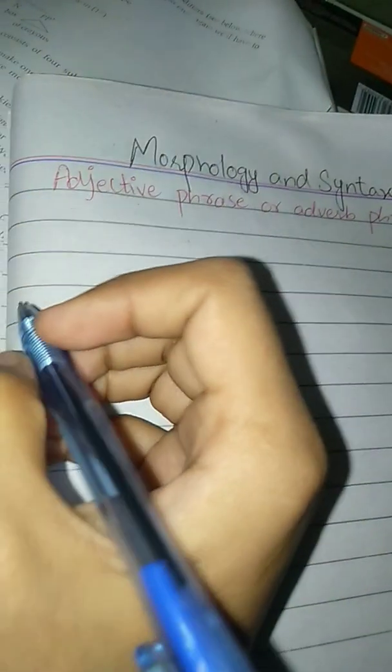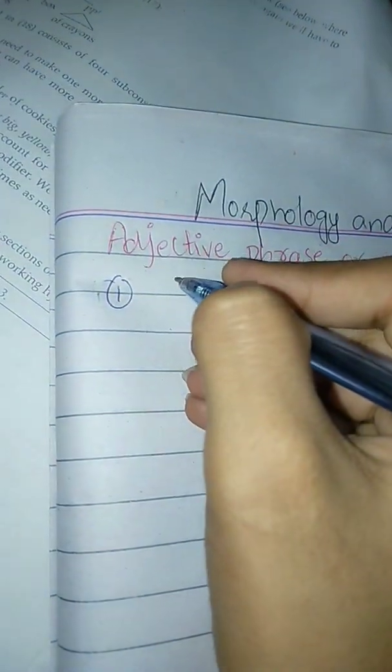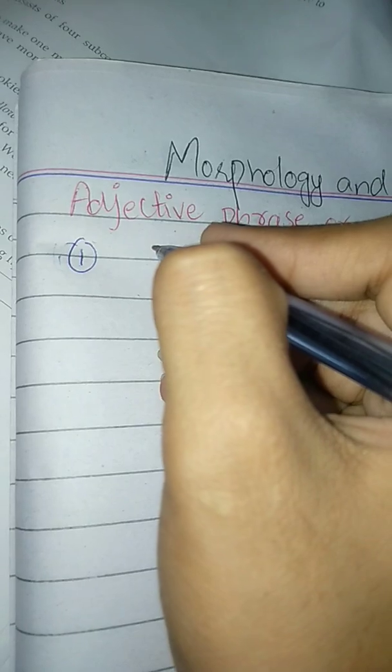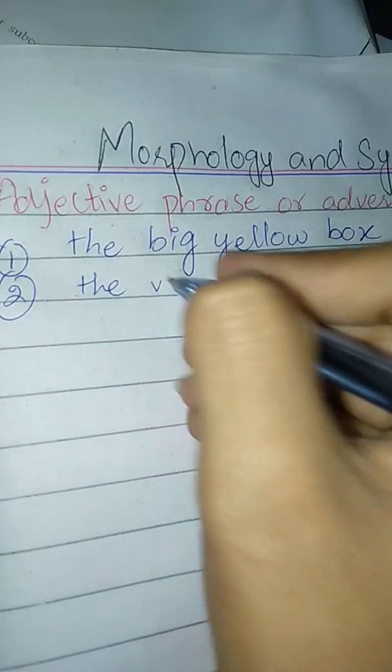First, we will write two examples. The first example is, I will write noun phrases where the noun phrase is used, and I will create three diagrams. The first one is 'the big yellow box' and the second one is 'the very yellow box'. Now, we start the tree diagram of noun phrase.